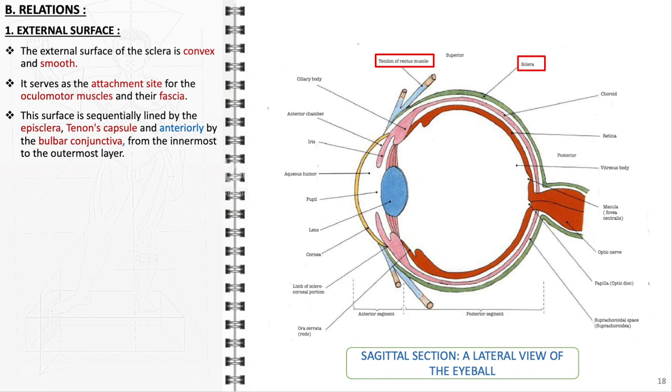The external surface of the sclera is convex and smooth. It is the primary attachment site for the oculomotor muscles and their fascia, which are crucial for controlling eye movement. This surface is layered, starting from the deepest layer with the episclera, followed by Tenon's capsule, and finally, anteriorly, it's covered by the bulbar conjunctiva. Each of these layers has a specific role in protecting the eye and aiding its functionality.